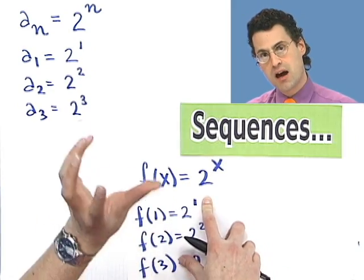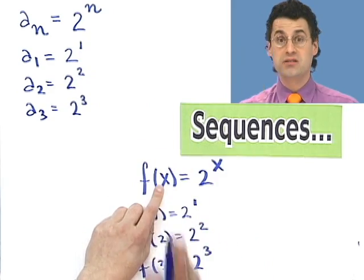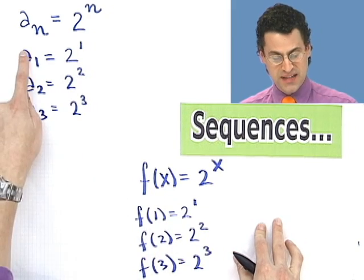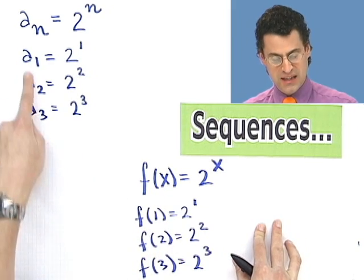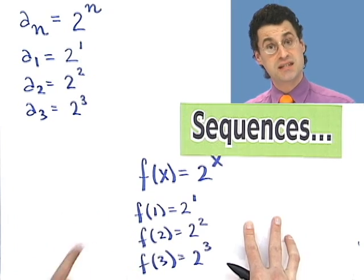So this is a way for me to describe a function, where the function now is only going to take on, I'm only going to plug in values that are counting numbers. 1, 2, 3, 4, and so forth. And this is how it looks. So these three things are the exact same thing as these three things here. But it's a different notation.